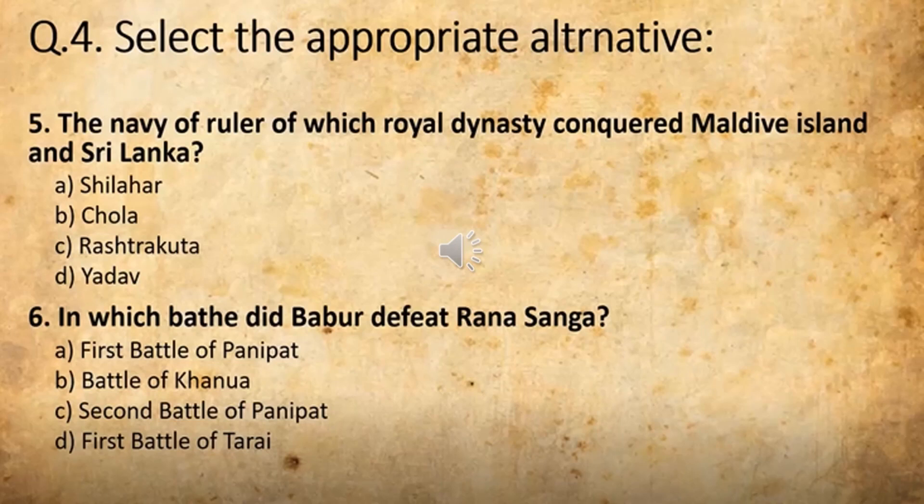Now moving on to the next one, the sixth one: In which battle did Babur defeat Rana Sanga? The options are: First battle of Panipat, Battle of Khanwa, Second battle of Panipat, and First battle of Tarain. The answer for this is Battle of Khanwa. I told you students that you have to read the lesson too.